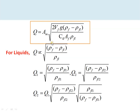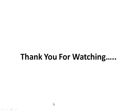When using a rotameter for liquids with a different medium than the calibrated one, the correction equation is different. For liquids, the liquid density is not negligible compared to the float density, so the full expression is used: Q is proportional to √[(ρ_float − ρ_liquid) / ρ_liquid]. The corrected flow rate is: Q_new = Q_1 × √[(ρ_float − ρ_liquid_new) / ρ_liquid_new] × √[(ρ_liquid_cal) / (ρ_float − ρ_liquid_cal)]. Whenever a liquid other than the calibrated liquid is used, this correction must be applied.